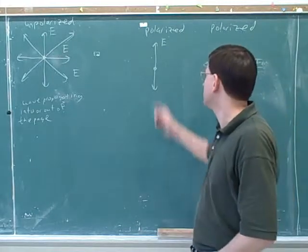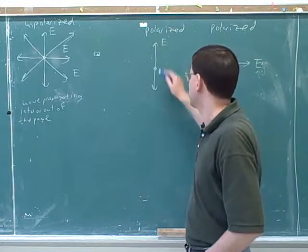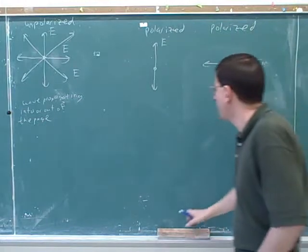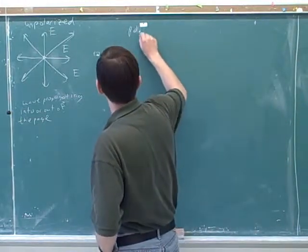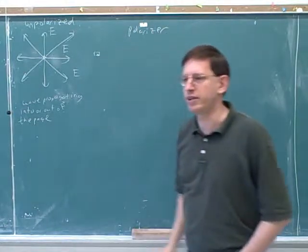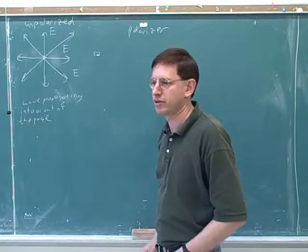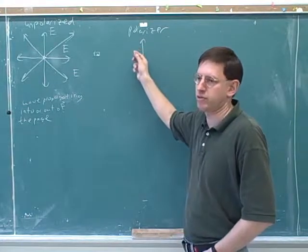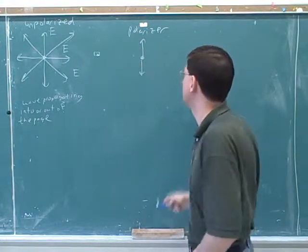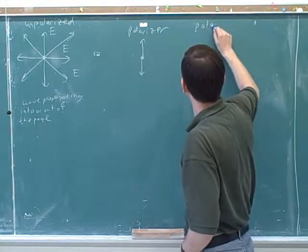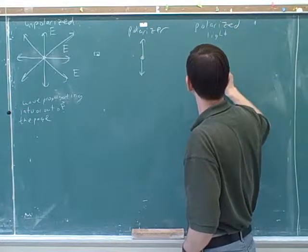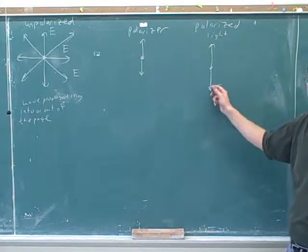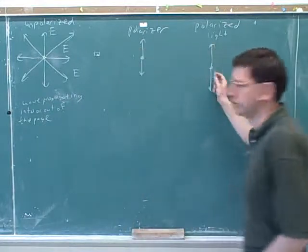It would be a good question: which way is the magnetic field polarized here? Because it has to be perpendicular to this if the wave is still propagating into and out of the page. Now, how do we get this polarization? We pass the light through a polarizer. A polarizer is simply a device that only allows one type of oscillation through. For example, maybe this polarizer only lets up and down oscillations through. Then after the light passes through the polarizer, if this was the original unpolarized light, the new light would look like this.